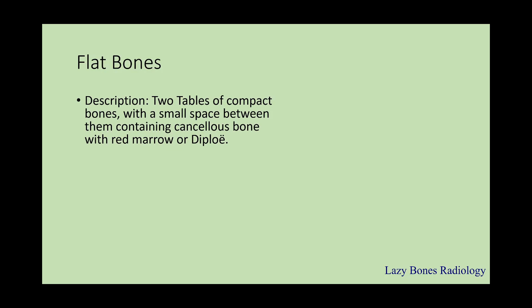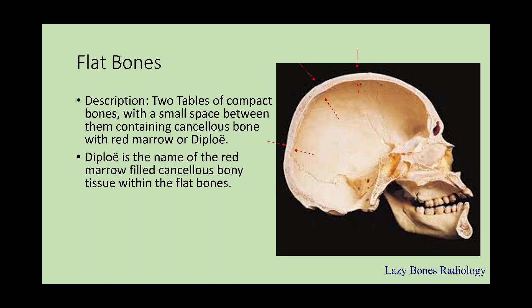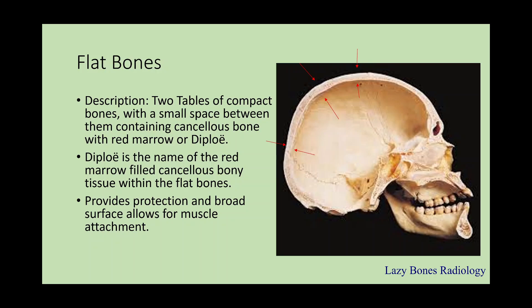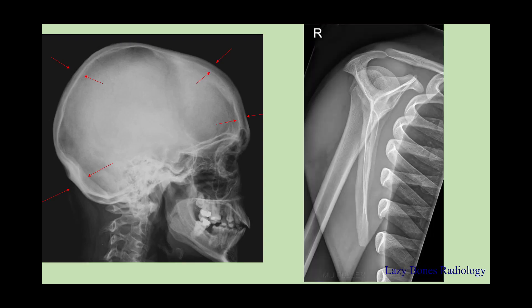Flat bones consist of two tables of compact bone with a small space between them containing cancellous bone filled with red marrow, known as diploë. Diploë is the name of the red marrow-filled cancellous bony tissue within flat bones. Flat bones provide protection and a broad surface which allows for muscle attachment. Examples include the cranium, sternum, and scapula. Here are x-rays showing the flat bones of the cranium and the scapula — see how flat they are.